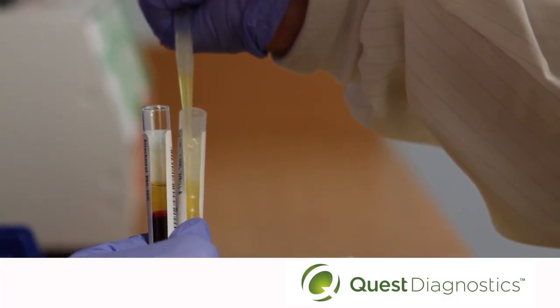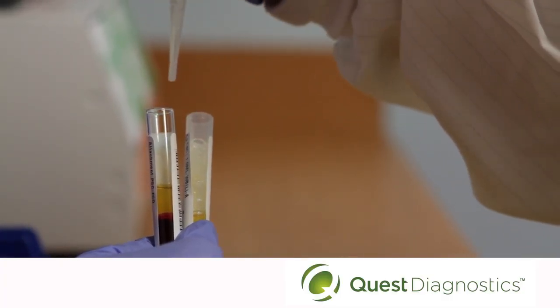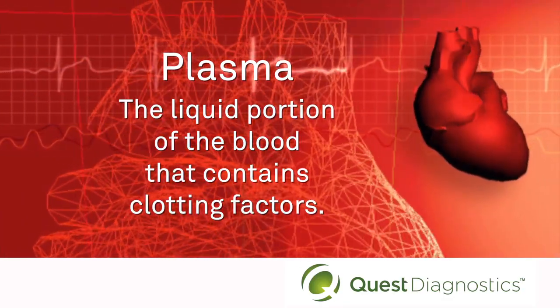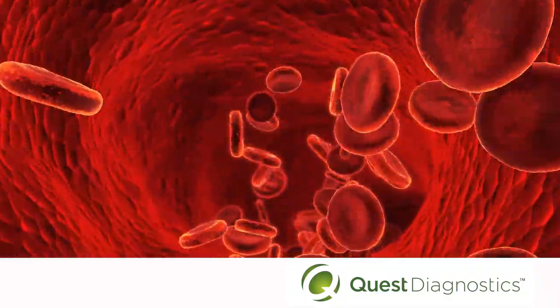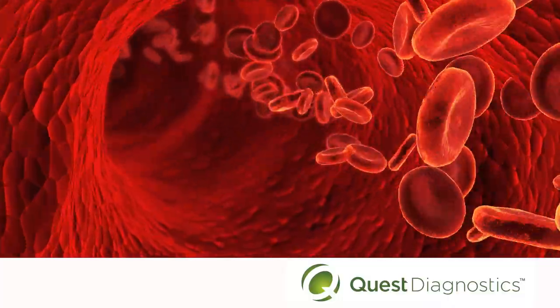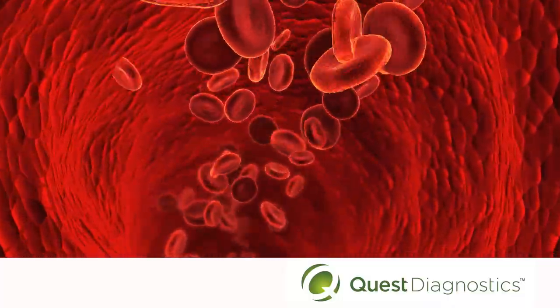But before we get started, let's take a minute to talk about plasma. Plasma is simply the liquid portion of the blood that contains clotting factors. Plasma is an important specimen due to the fact that most chemical substances tested for are found dissolved in the plasma.